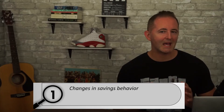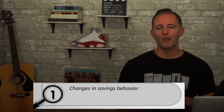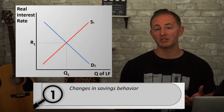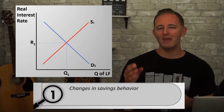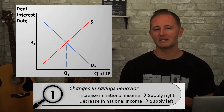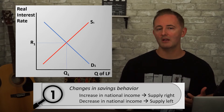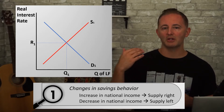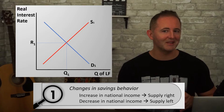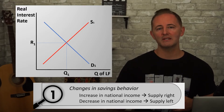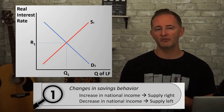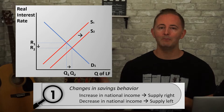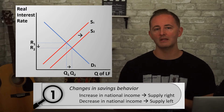Now the supply curve. Something has to make people change their savings behavior besides a change in the real interest rate. One thing is an increase in national income. As long as their MPC stays the same, if a person has more income, they will save some of that increase. So an increase in national income, aka real GDP, increases the supply of loanable funds, shifting the supply curve to the right and pushing down real interest rates.